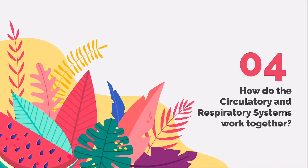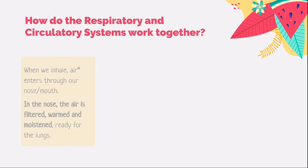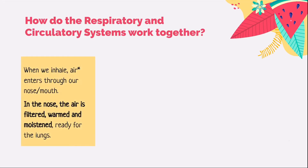So then, how do the circulatory and respiratory systems work together? Follow me closely as I explain this flowchart. When we inhale, air enters through our nose or mouth. In the nose, the air is filtered, warmed, and moistened, ready for the lungs. This is transported to the lungs through the windpipe. Note that the air breathed in does not only contain oxygen — air contains nitrogen, oxygen, carbon dioxide, and other gases at different proportions. It is only mainly oxygen that is useful for our body in respiration to produce energy.